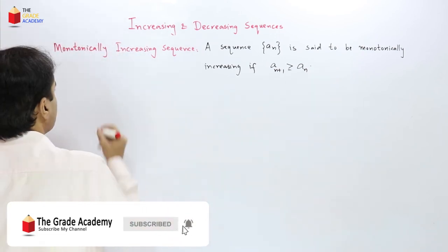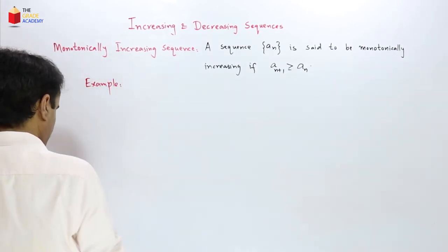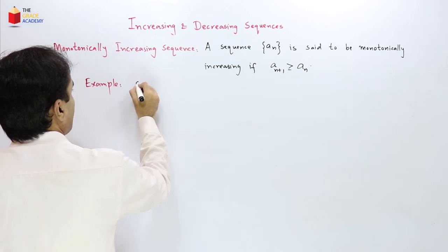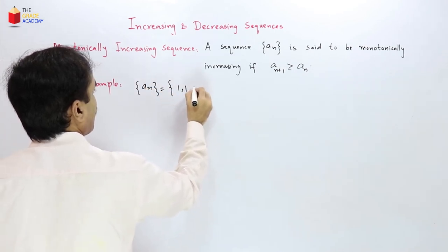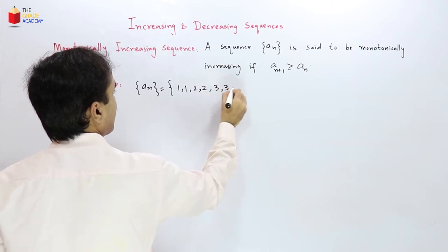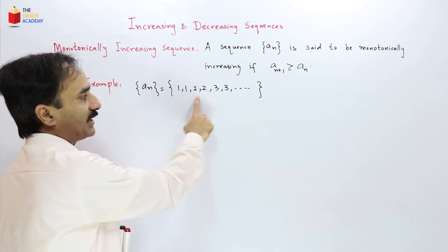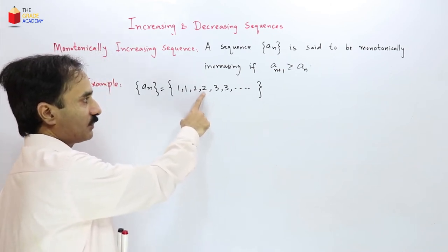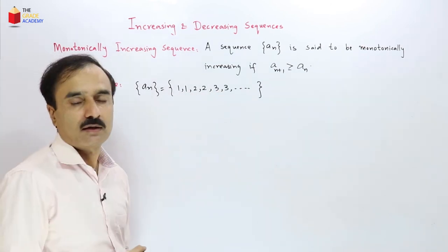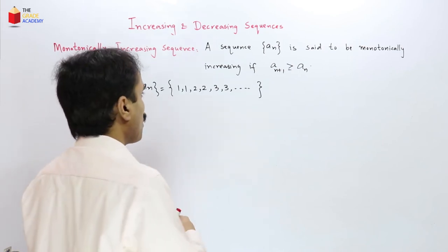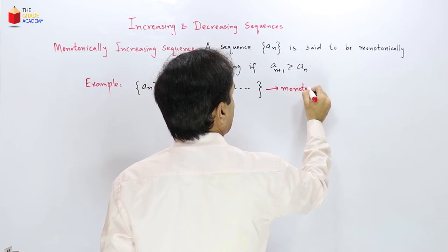For example, consider the sequence 1, 1, 2, 2, 3, 3. Here, if we pick any two consecutive terms, either those terms will be equal or the next term will be greater than the previous term. So this is a monotonically increasing sequence.